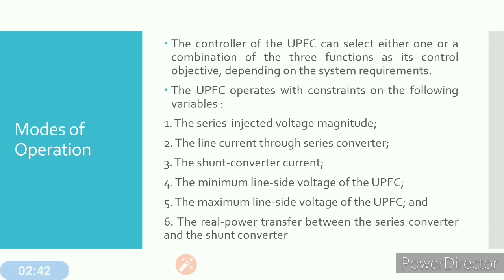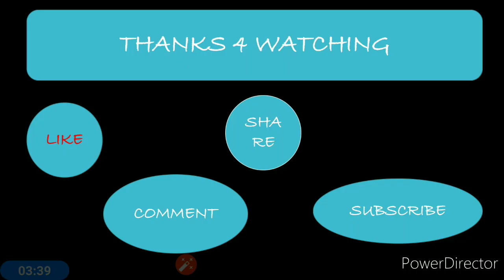The control of the UPFC can select either one or a combination of three functions as its control objective, depending upon the system requirement. It can work as one function, as a combination of one and two functions, or as a combination of all three functions simultaneously. There are six constraints controlled by the UPFC: the series injected voltage magnitude, the line current through the series converter, the shunt converter current, the minimum line side voltage of UPFC, the maximum line side voltage of UPFC, and the real power transfer between the series converter and the shunt converter.